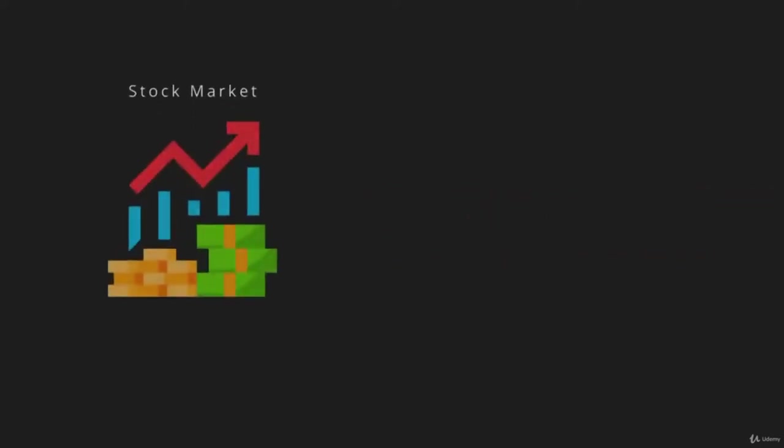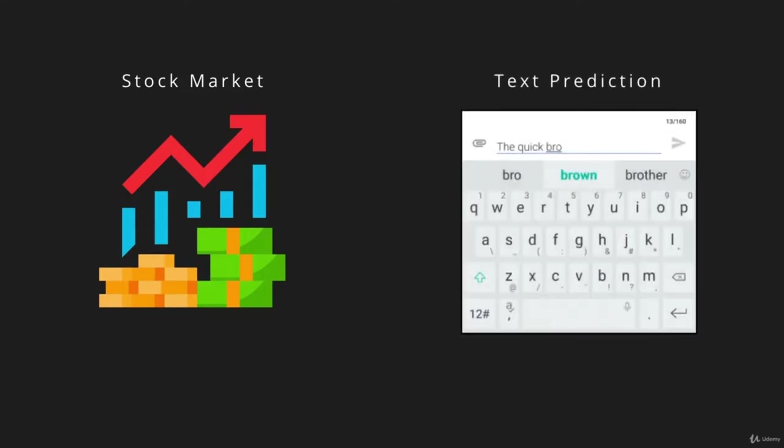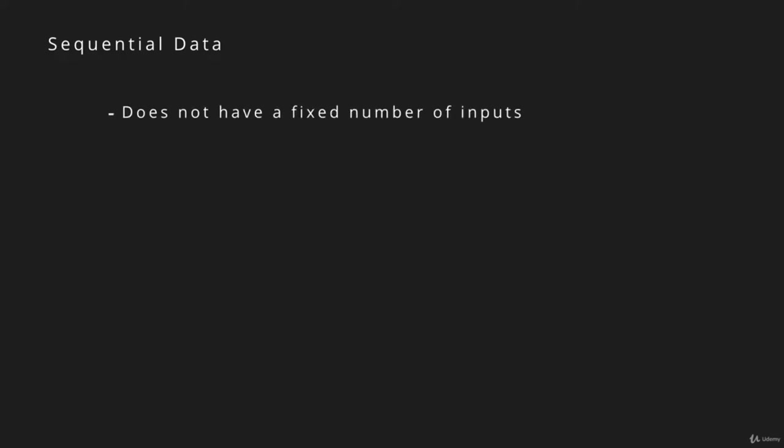Sequential data is all around us. The stock market graph is a sequence of pips, and you can use the history of this data to determine if the market will perform positively or negatively in the future. Or consider the predictive text in your phone, which looks at a sequence of words and tries to determine what the next word is. Sequential data doesn't have a fixed number of inputs — for example, a sentence can have a various number of words — and order is extremely important.